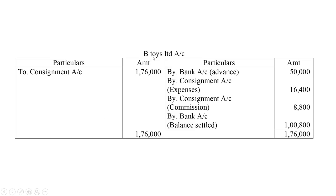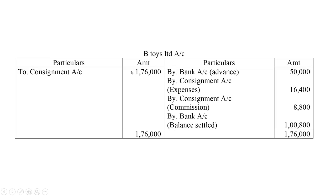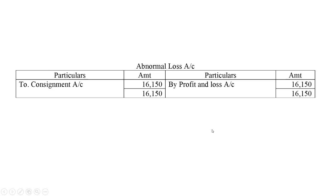Moving to B Toys Limited account: credit side shows consignment account Rs. 1,76,000 for sales made by B Toys. Debit side shows bank account advance Rs. 50,000, consignment account expenses Rs. 16,400, and commission Rs. 8,800. The balance of Rs. 1,00,800 will be settled through bank.